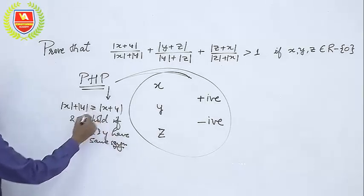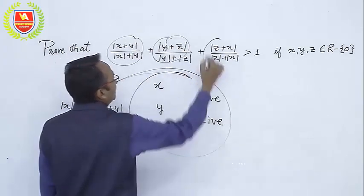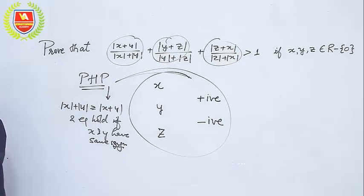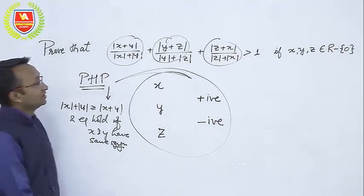So by this logic, one of these three expressions is bound to be 1. The other two cannot be 0 and cannot be negative because it is modulus, so the whole sum is obviously greater than 1.